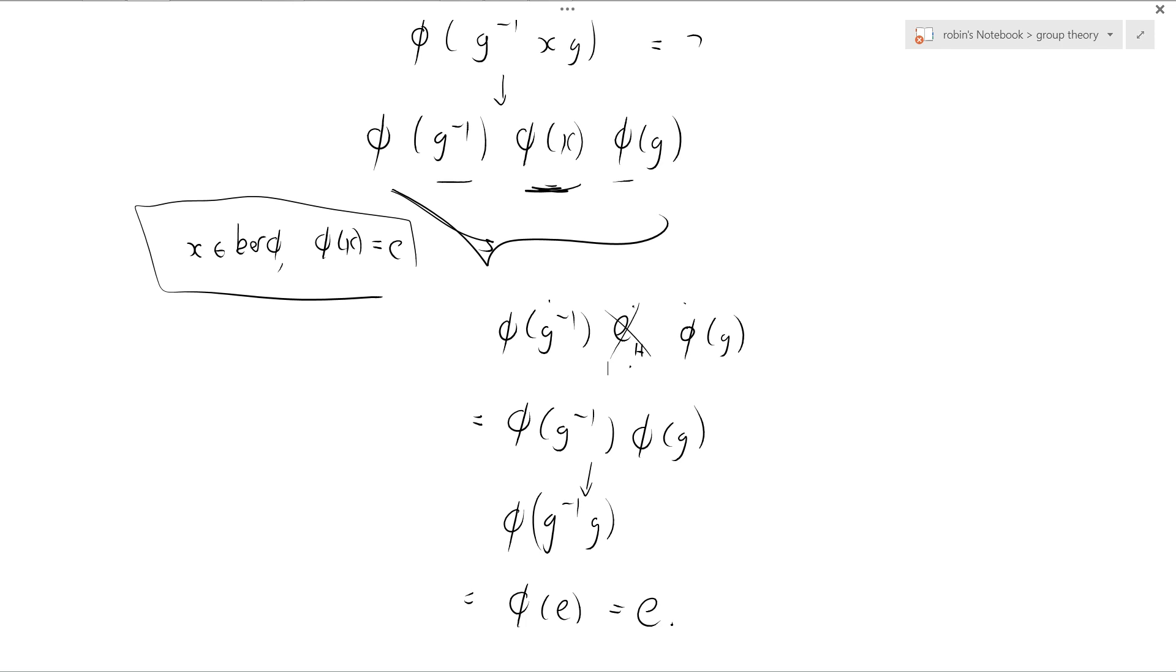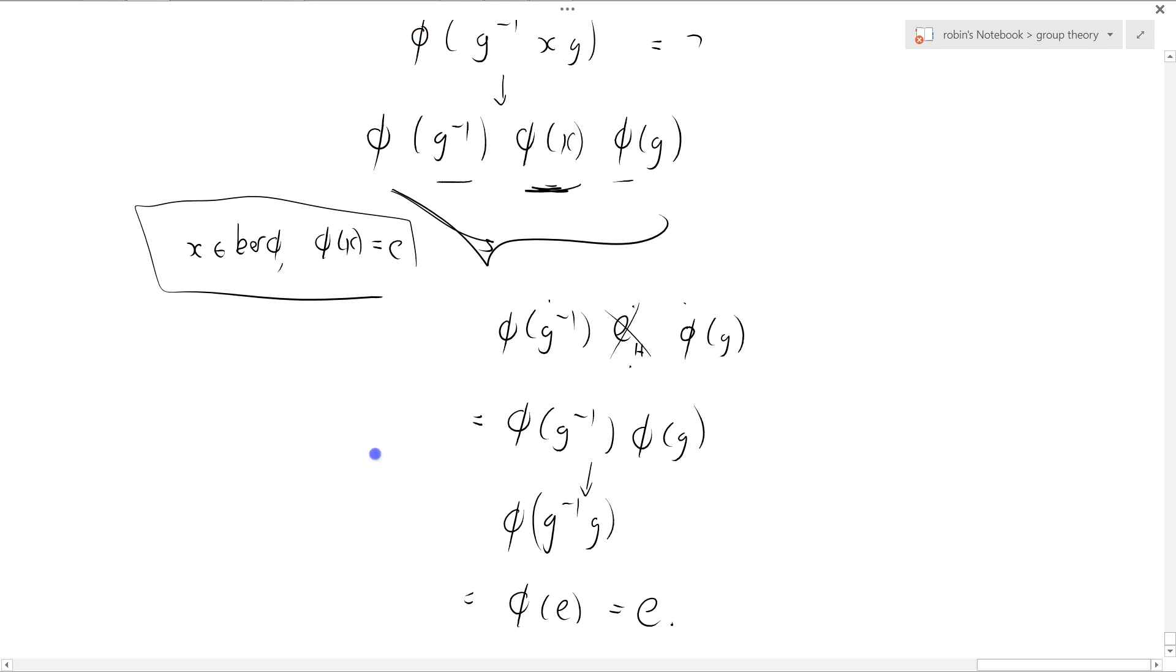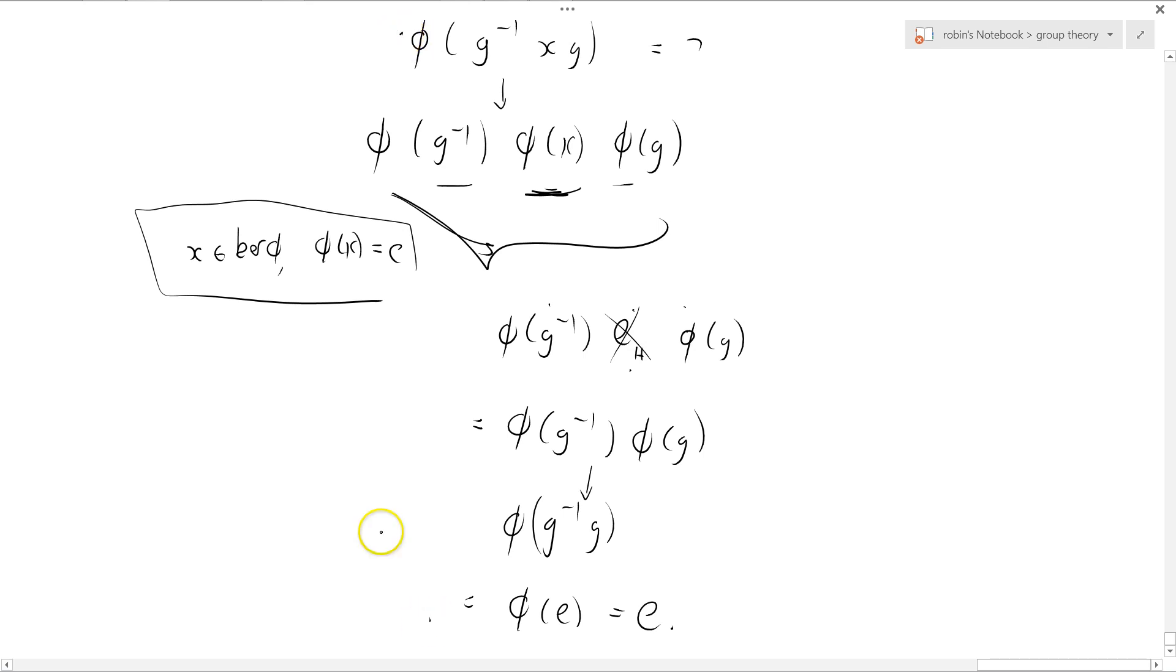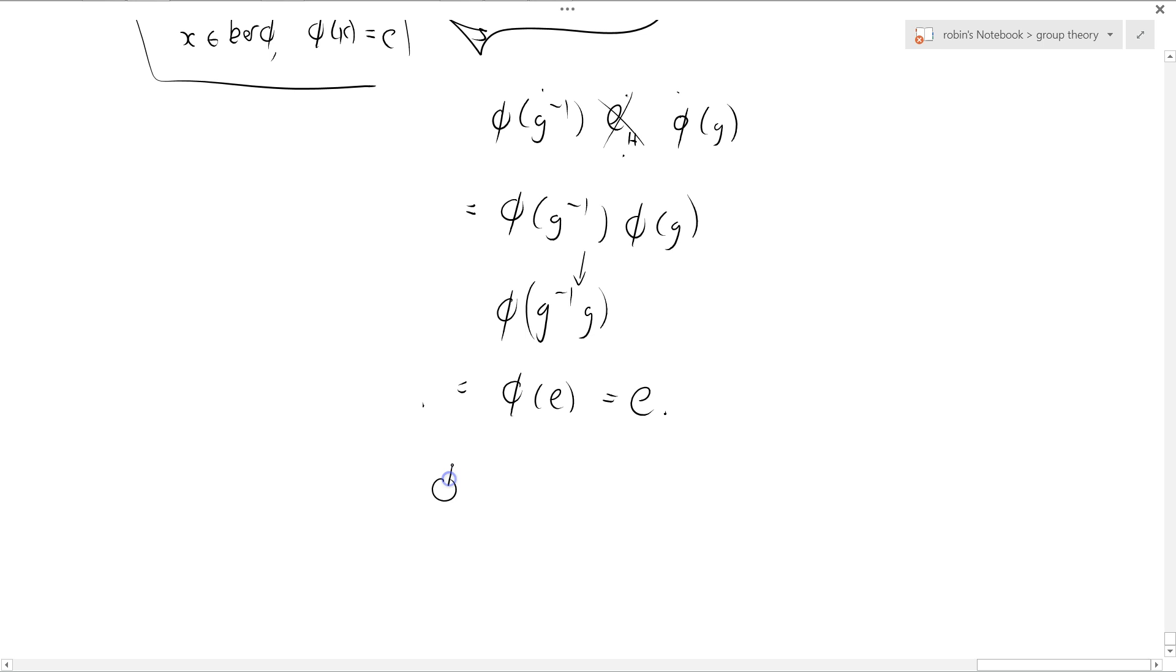So you can see that a map being a homomorphism is a very powerful statement. So what have we shown? Altogether, we've shown in these lines of reasoning from here down to here, we have shown that phi of G inverse XG equals E.